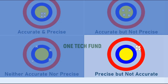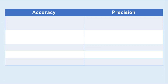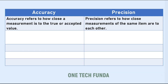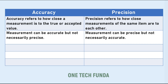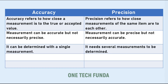In summary: accuracy refers to how close a measurement is to the true or accepted value, while precision refers to how close repeated measurements of the same item are to each other. A measurement can be accurate but not necessarily precise, and precise but not necessarily accurate.